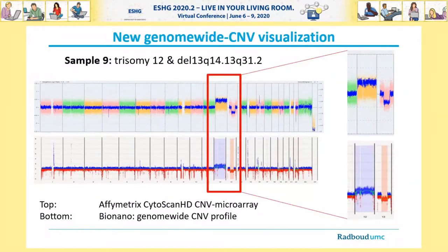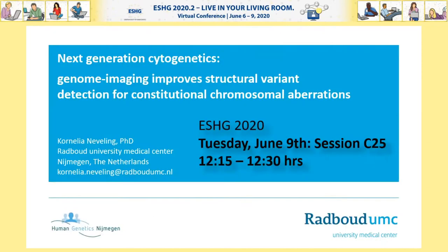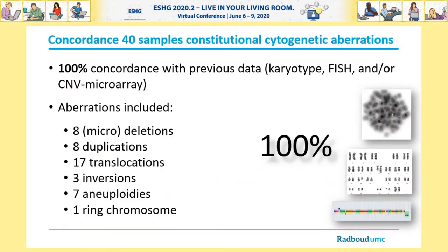BioNano has also launched a genome-wide CNV visualization tool that mimics the view from CNV microarrays. One example shows a case with trisomy 12 and a partial deletion of chromosome 13 — comparing the classical array profile to the BioNano profile, results look highly similar. In a separate study, we investigated how well BioNano optical mapping can identify constitutional chromosomal aberrations, and I'd like to point out that my colleague Cornelia Nevening will give more details at ESHG. The high-level summary: we identified 100% concordance between BioNano optical mapping and previously retrieved data by karyotyping, FISH, and CNV microarrays.